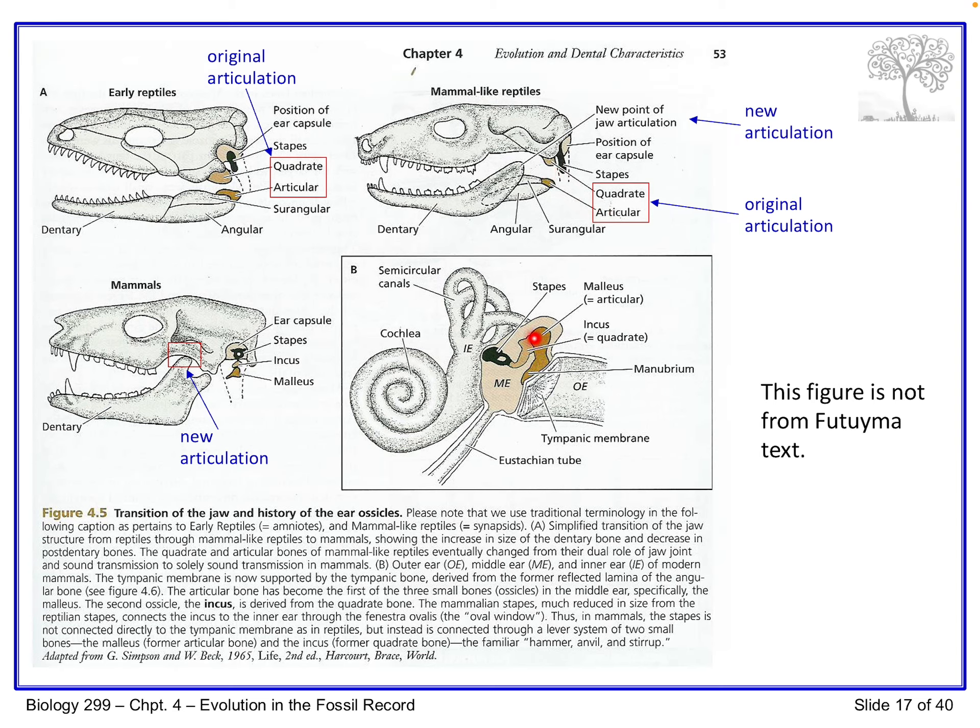We can see the high-crowned hypsodont tooth here and the low-crowned brachydont tooth here. Hyracotherium dated back to about 55-60 million years ago. Body size stayed pretty small for a long time, but then right around 20-25 million years ago body size increased, and that's when we also see a shift from brachydont teeth to hypsodont teeth. These patterns all correspond with one another, probably driven by the climatic shift in vegetation type.